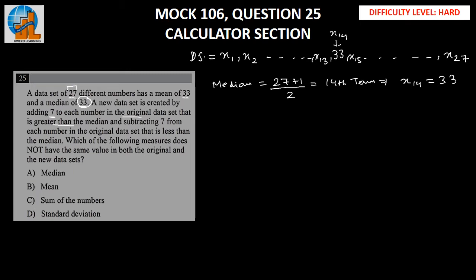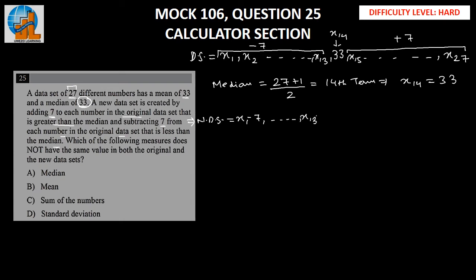In the new data set, we are adding 7 to all the numbers after the median — from x15 to x27 — and we are subtracting 7 from all the numbers less than the median — from x1 to x13. So the new data set will look like: x1 minus 7 till x13 minus 7, then x14 (which remains 33), then x15 plus 7 till x27 plus 7. The median will remain 33 because we are not doing anything to the 14th term. That is how our two data sets look.